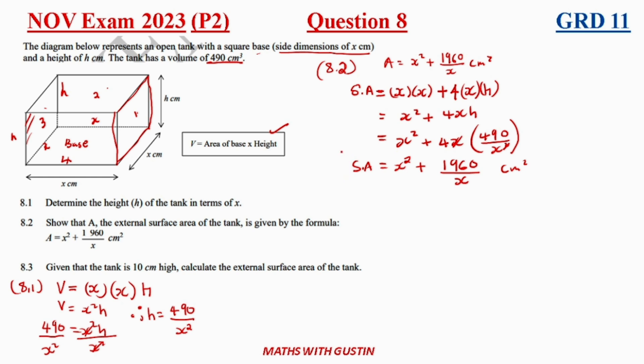Now let's move on to 8.3. 8.3 guys. Let's go ahead do 8.3 with a different color. 8.3 says if given that height h is equal to 10 centimeters, calculate the external surface area of the tank.